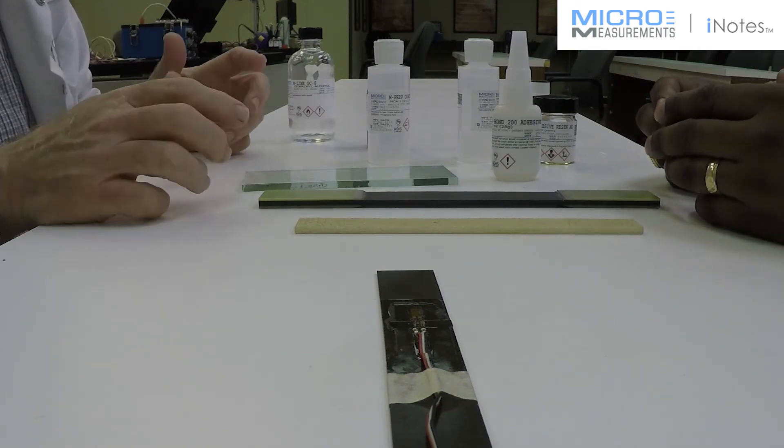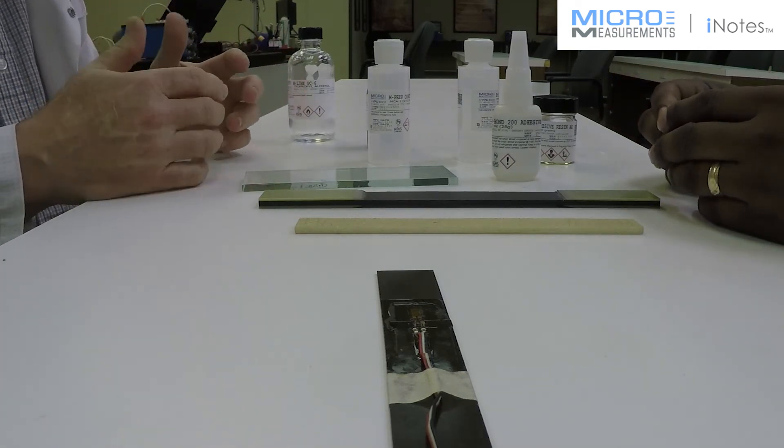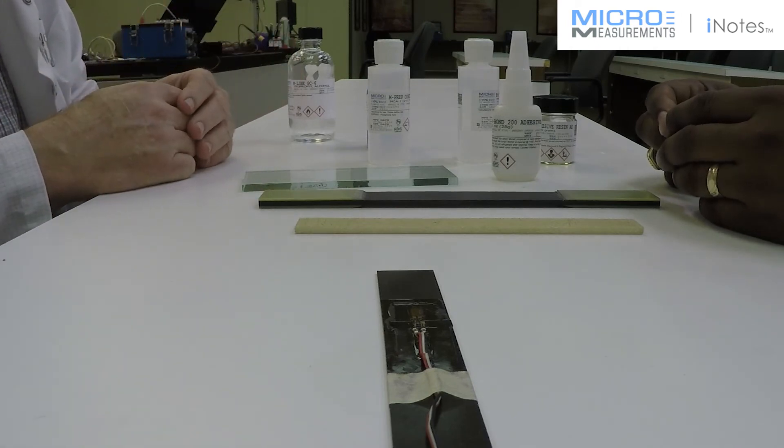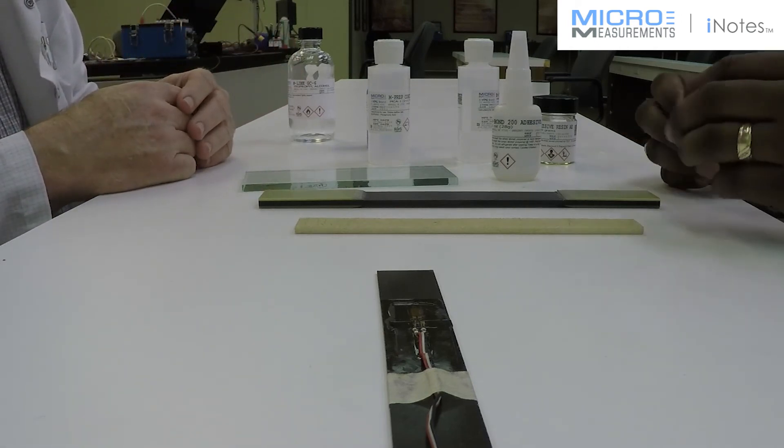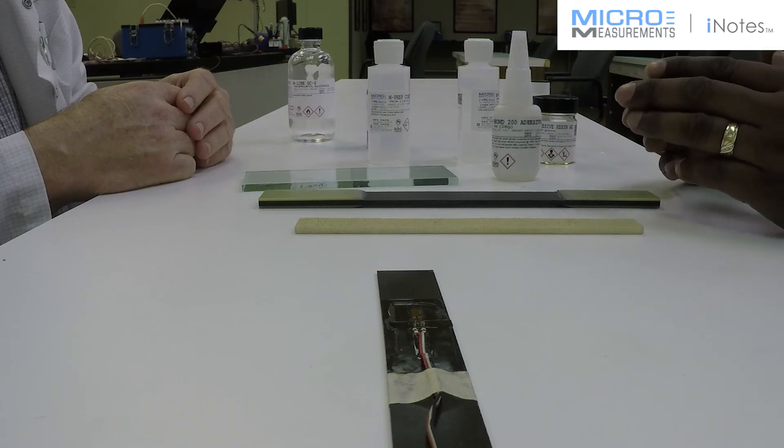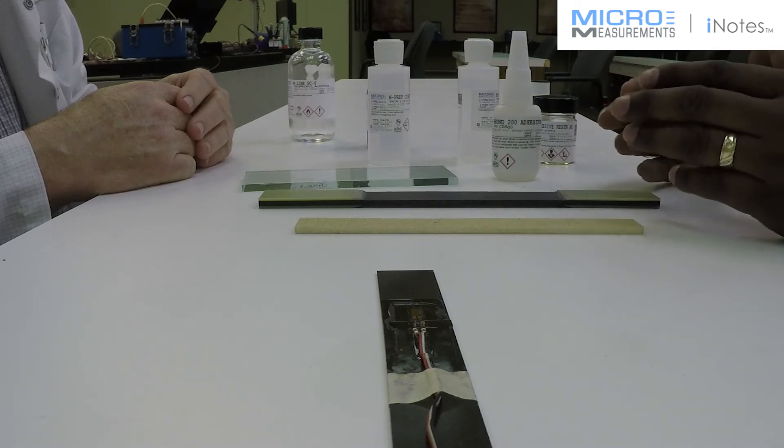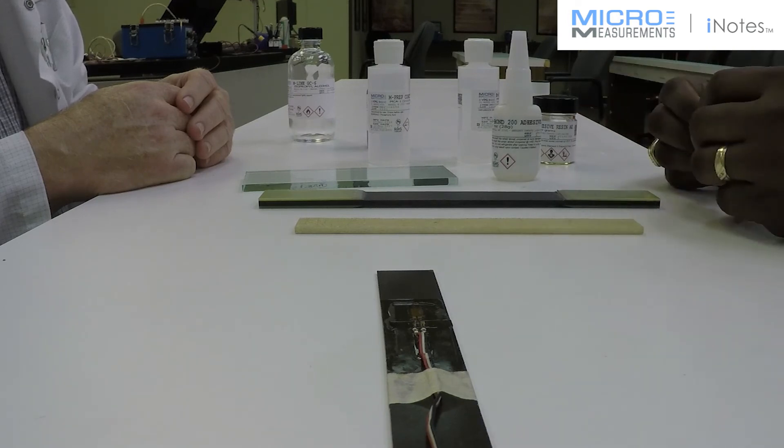What about the size of the strain gauge? How big a gauge or how small a gauge should I use on my composite material? Right. In terms of composites, we generally want to go with a gauge that has a pretty good averaging capability. So that would be something on the order of an eighth inch or a quarter inch gauge length.